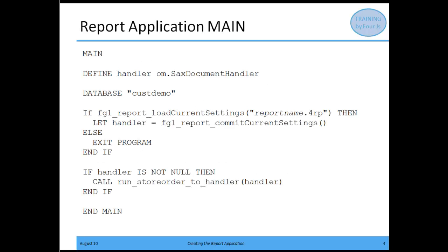The first part of this simple report application is the main module. In this main module, we start with main. Next, we define a variable called handler — that's a SAX document handler. If you look in the BDL documentation, you'll find that the SAX document handler is a class that helps write out XML. So I set up my variable — the handler — which is going to be the report handler. Then I specify the database; in our example, we're going to read our data in from a database.